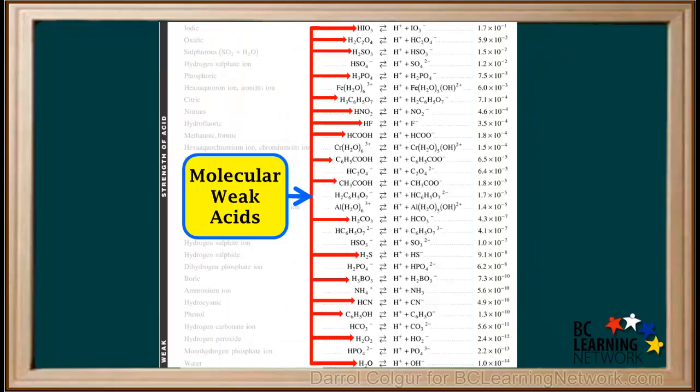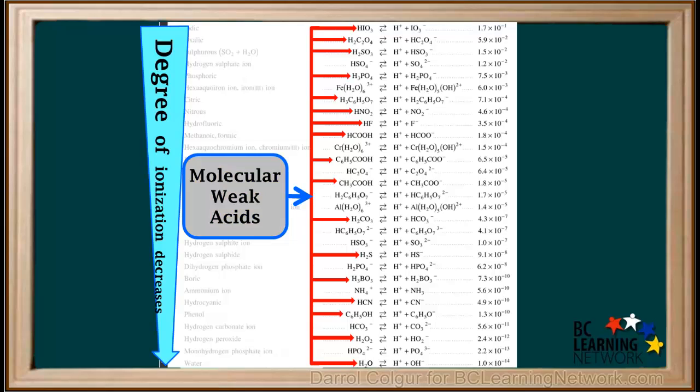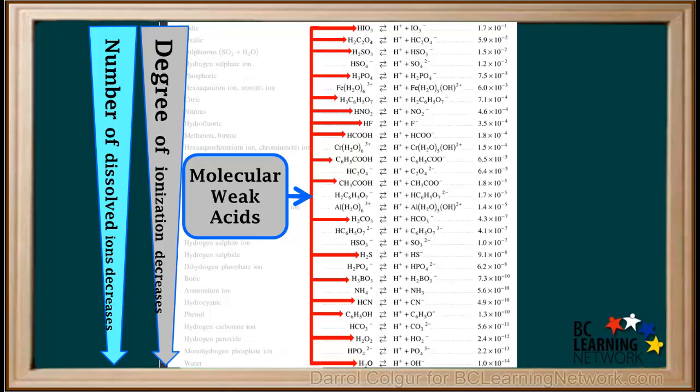Molecular weak acids are indicated here by the red arrows. These are acids that are neutral molecules before they ionize. Because the degree of ionization decreases as we move down the table, it means that the number of dissolved ions present in 1 molar solutions of these molecular acids will decrease as we move down.